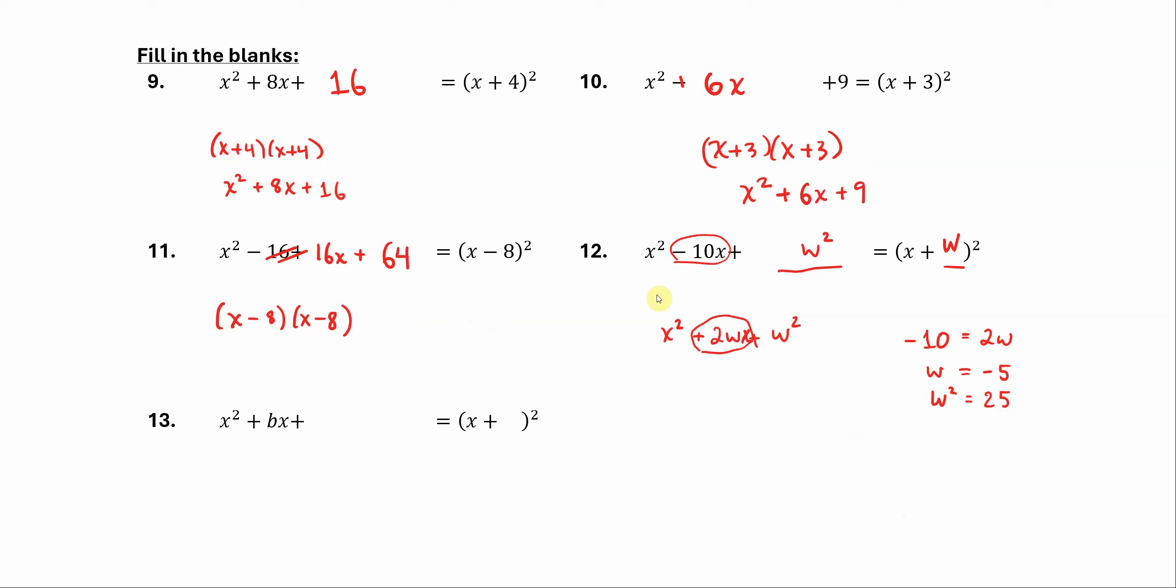Let's see if I can do that. I'll write down here in a slightly different color. This would be x squared minus 10x, just as before, plus w squared. We know, so that's 25. That's going to go into that blank, and that's going to be equal to x plus w, which is plus negative 5, or x minus 5 quantity squared.